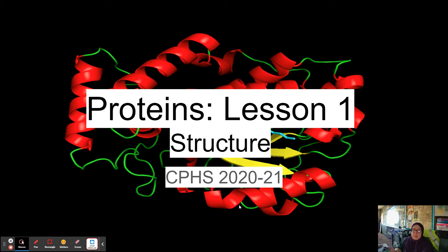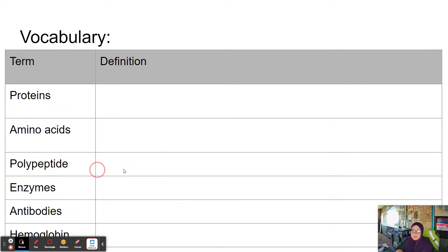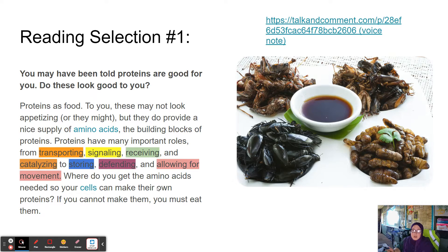Hey everybody, let's talk about basic protein structure. This is Proteins Lesson One: Protein Structure, Mrs. Pickard Reviews. There are six major vocabulary words we're going to hear over the course of this lesson: proteins, amino acids, polypeptide, enzymes, antibodies, and hemoglobin. This comes from a CK-12 passage.